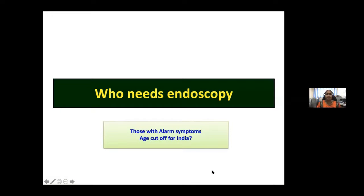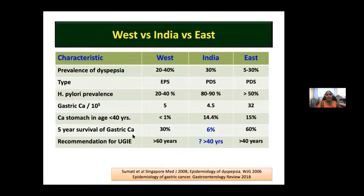The million-dollar question: who needs endoscopy? Definitely those with alarm symptoms. For India's age cutoff, we lack Indian guidelines. Across the world, the type of dyspepsia and H. pylori prevalence differ: India and East Asia predominantly have postprandial distress syndrome; H. pylori prevalence in India is high, similar to the East. Though India's incidence of gastric cancer appears low, we are likely missing many early gastric cancers.